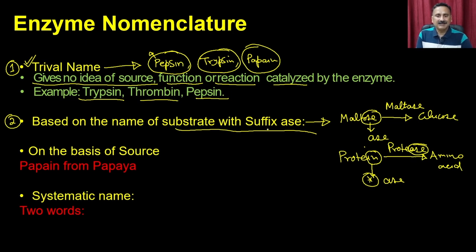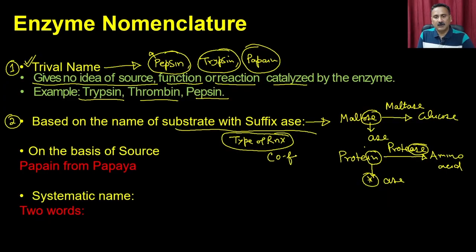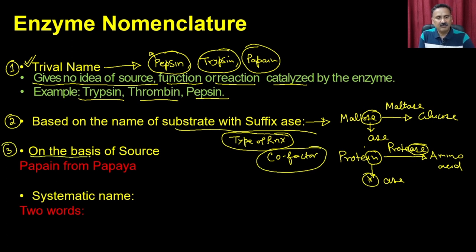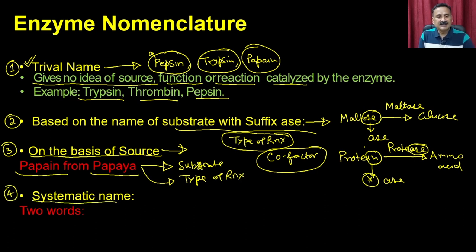The problem with substrate-based naming is that it does not provide information about the type of reaction it catalyzes, the cofactors it uses, and so on. A third approach is naming based on the source of the enzyme — for example, papain, isolated from papaya. But that also has problems: it gives the source but no information about the substrate or type of reaction.